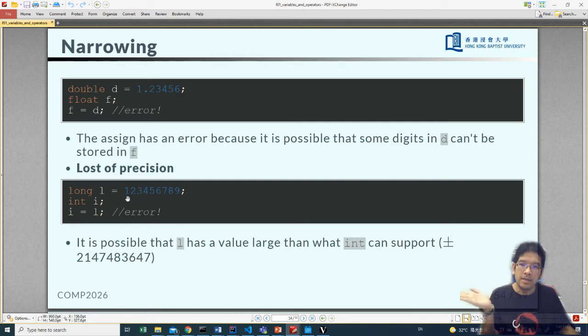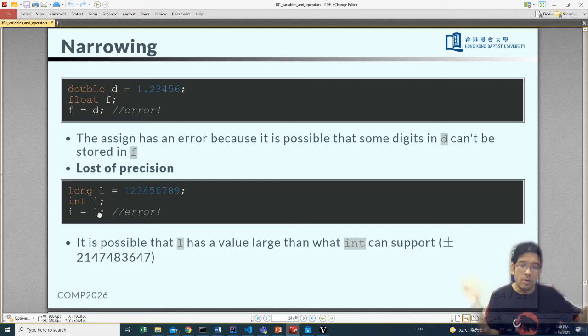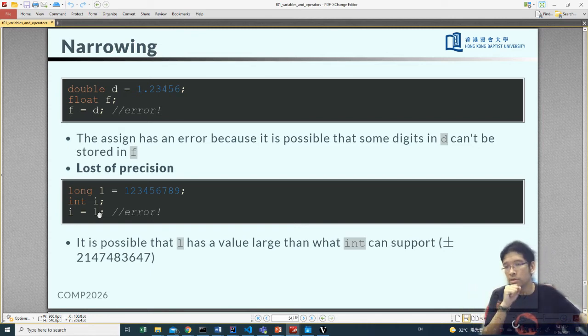Similarly, if you have a long and you say 123456789, which is actually less than the maximum number of integer, integer holds this number no problem. But when you do i equals to l, that could be a potential loss of precision as well. Because long, potentially, can have a longer number that i can hold. So the compiler will stop you from doing this.